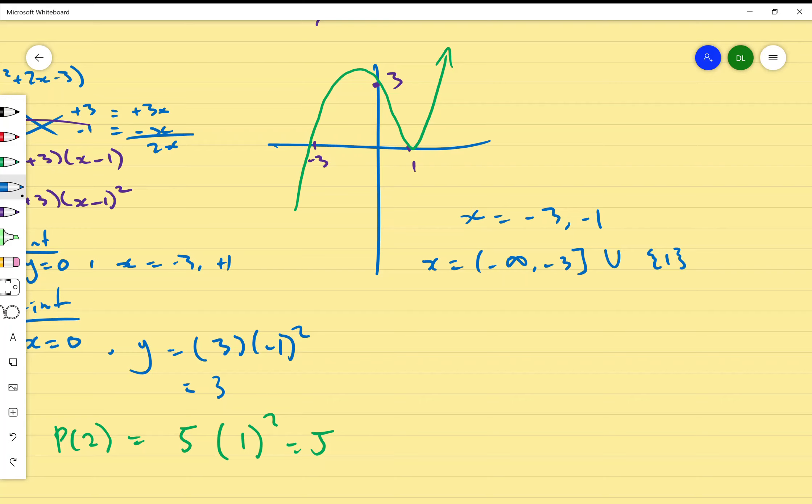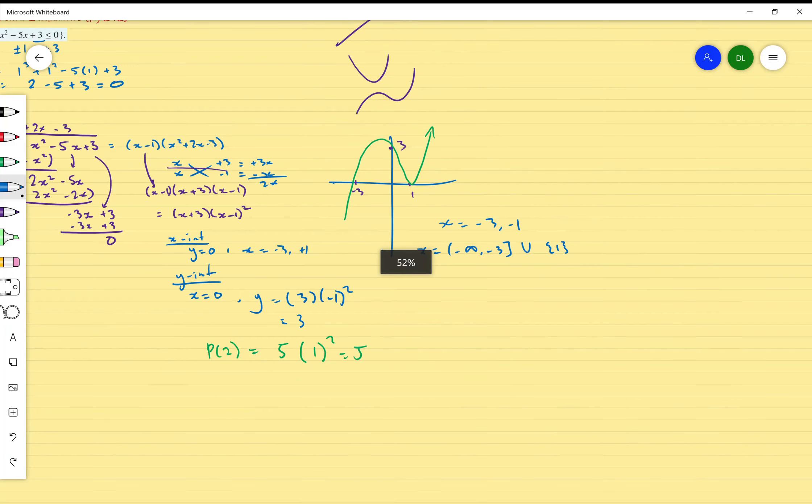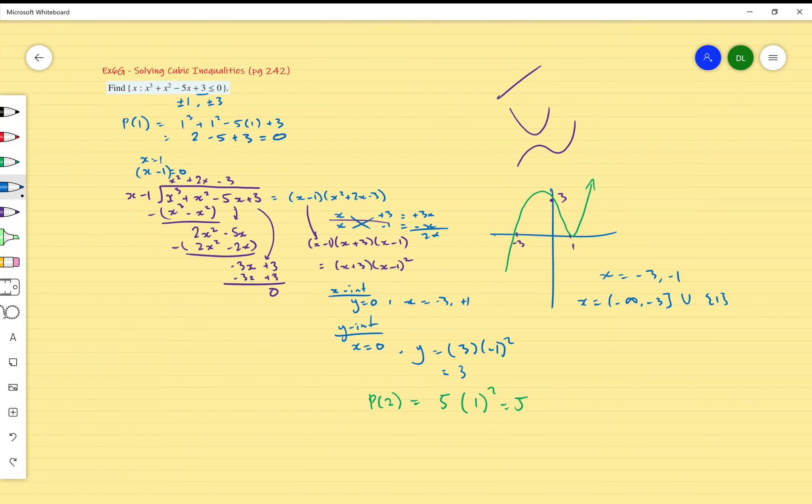Do I have any questions about this? So just to quickly review, we treat it as if it's an equal sign. We sketch, we graph, we solve. And then using that graph we find when that graph is positive or negative, depending on what the question is asking. So it's the same as quadratic inequalities from there. Alright, awesome. So that's exercise 6G.